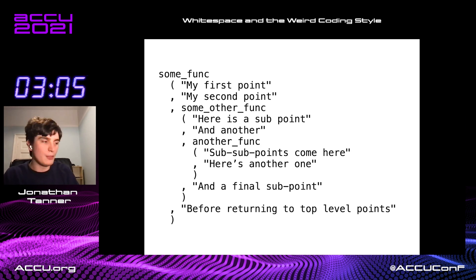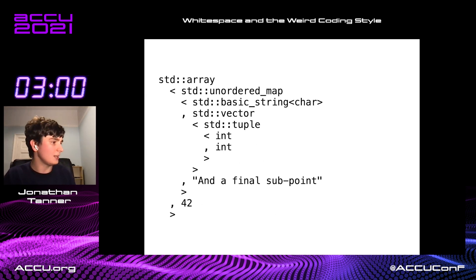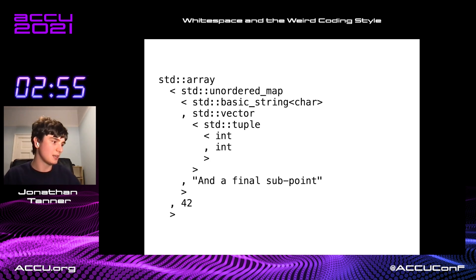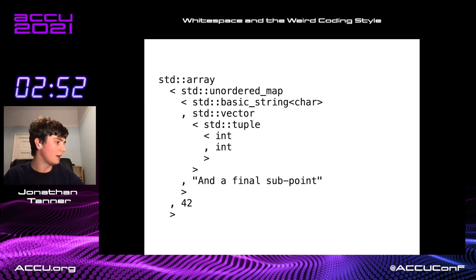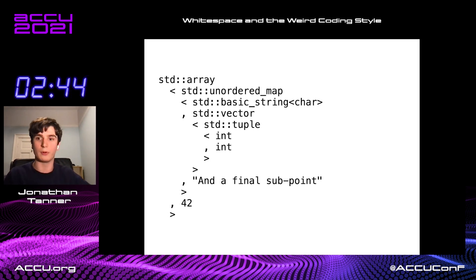Because you can just follow up the list of commas. This also works for other types of lists — this is a list of template arguments. Again, we are hideously nested here. We've got an array of maps from strings to vectors of tuples of ints. And right at the bottom, we have a line that shouldn't be there, and also the length of the vector, the length of the array. I know that's the length of the array because I can look at the bullet points and they line up.